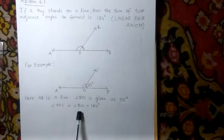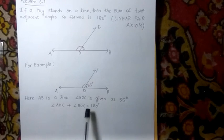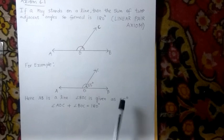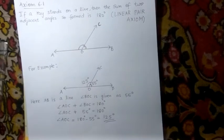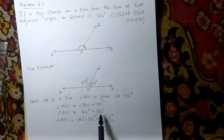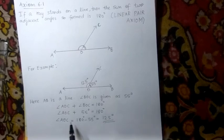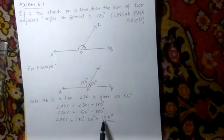In place of angle BOC, we will write 55 degrees since it is given as 55 degrees. So angle AOC plus 55 degrees is 180 degrees. When we solve this equation, we get angle AOC as 125 degrees.